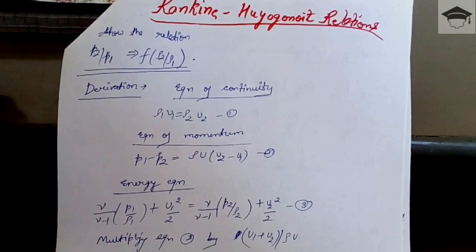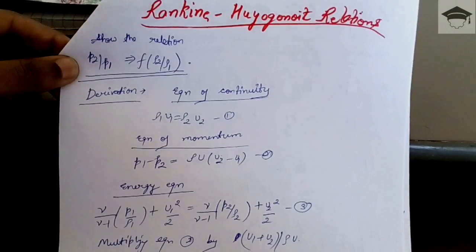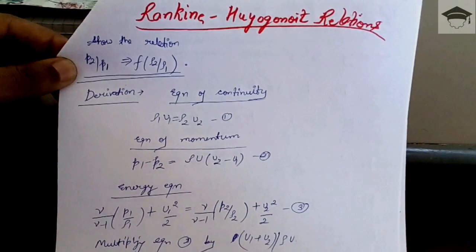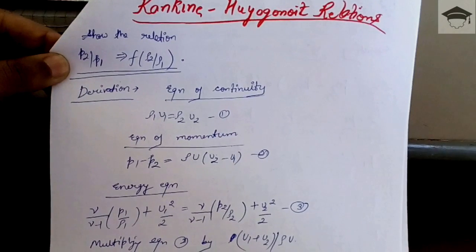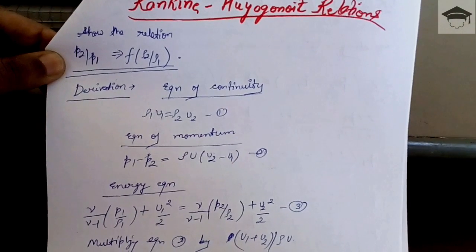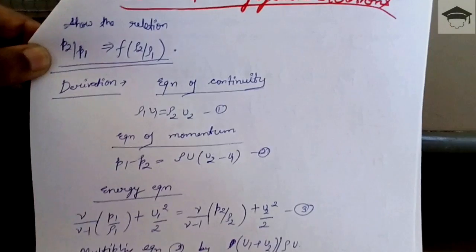What we have to do is show that the ratio p2/p1 is a function of ρ2/ρ1. This is the Rankine Huguenot relation they both derived.